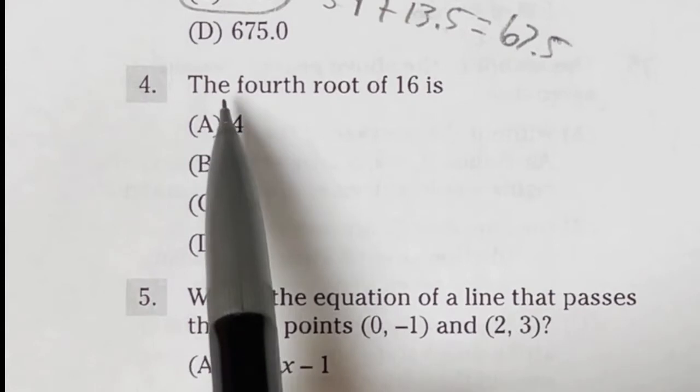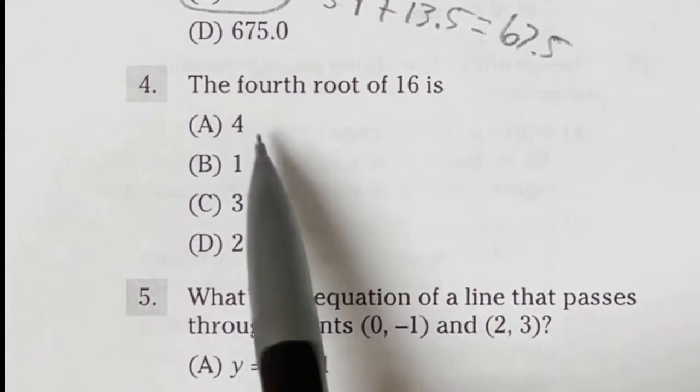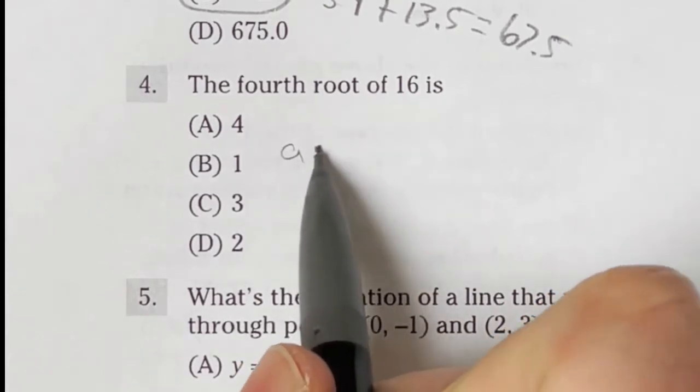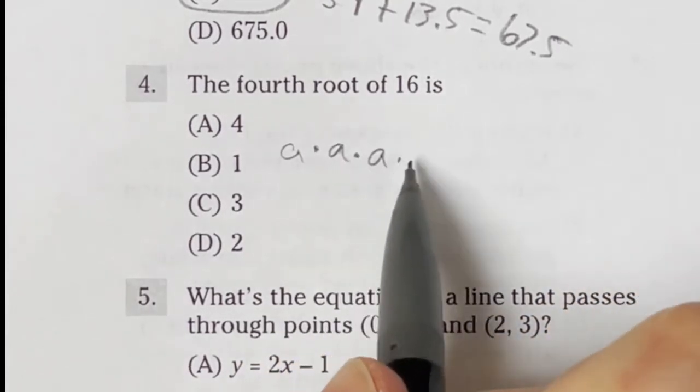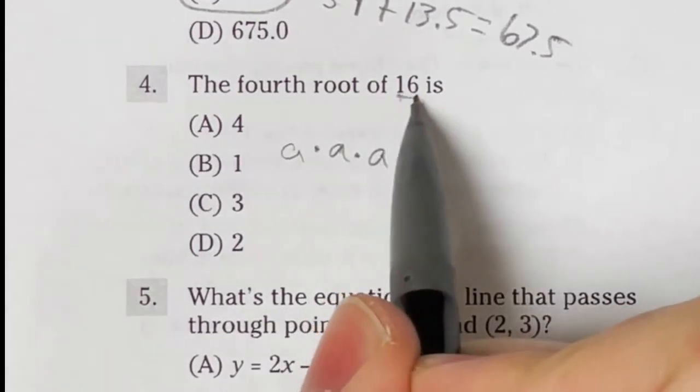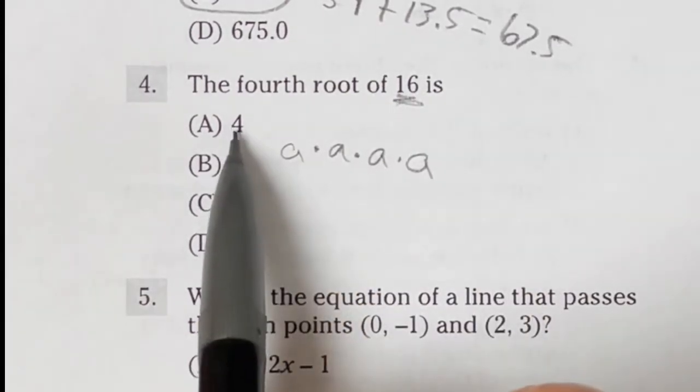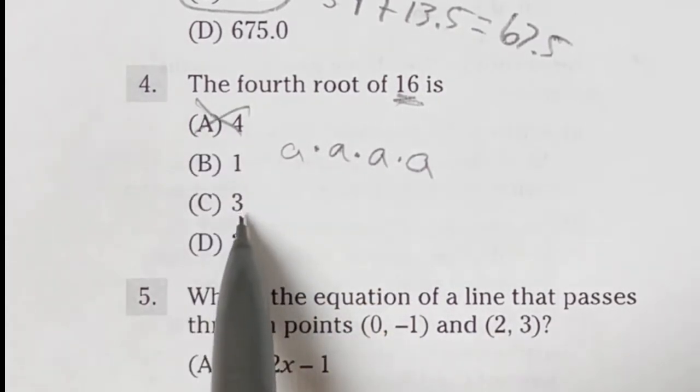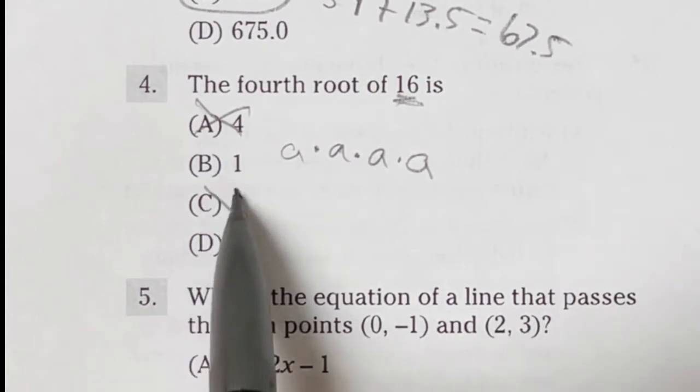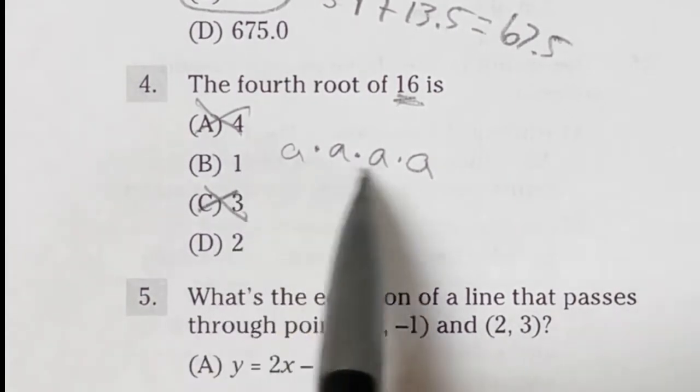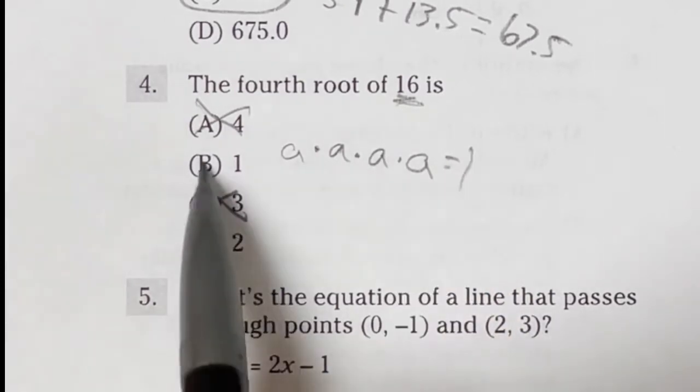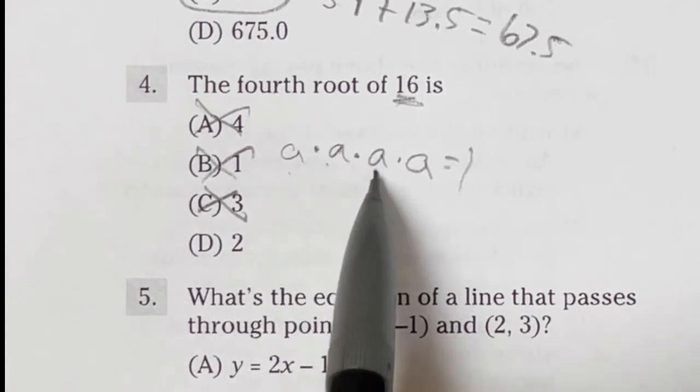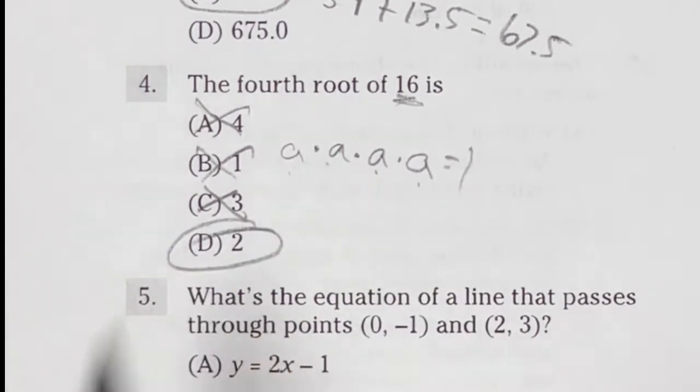Working on number 4 here on the ASVAB, it says the fourth root of 16 is, and it gives you these options. So fourth root means that you are taking some number and multiplying it by itself four times to get 16. Now here's the deal right now. 4 times 4 is 16 right off the bat, and that would only be two of them. So that's too big. And 3 times 3 is 9 times another 3 is 18. So that's going to be too big. And 1 times itself over and over and over is just always going to be 1. So that has to be out. Meaning our answer has to be 2, but let's check it. 2 times 2 is 4 times another 2 is 8 times another 2 would be 16. So our answer is D.